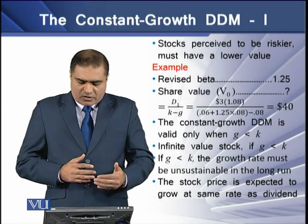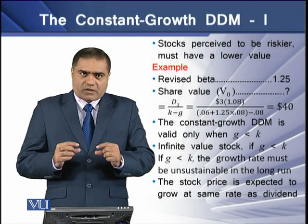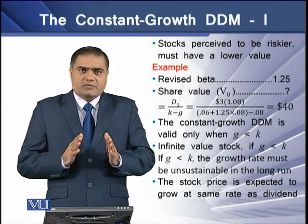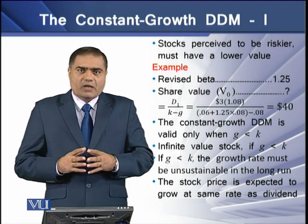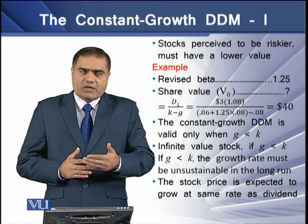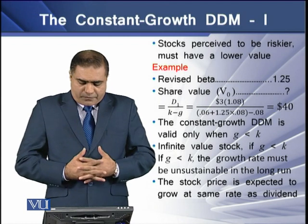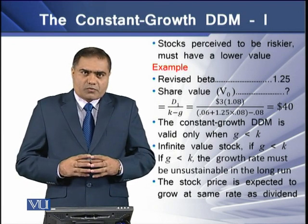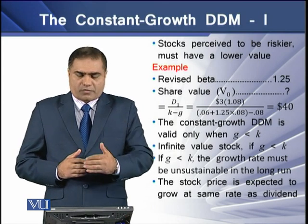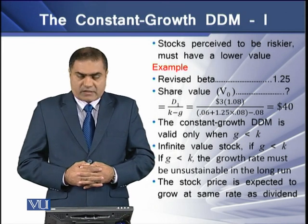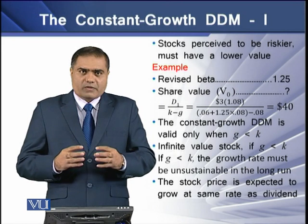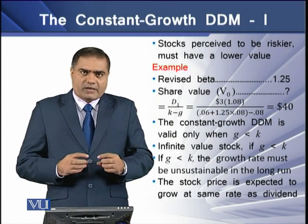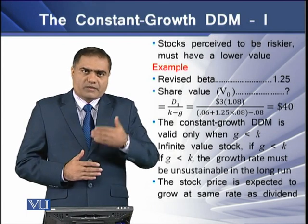This model, known as the constant growth dividend discount model, is valid only when G is less than K. If G is greater than K, we get an infinity value as our solution. The growth rate must be unsustainable in the long run, because we cannot have K less than the growth rate. The stock price is expected to grow at the same rate as the dividend, so any increase in the dividend growth rate will be accordingly reflected in the stock price.